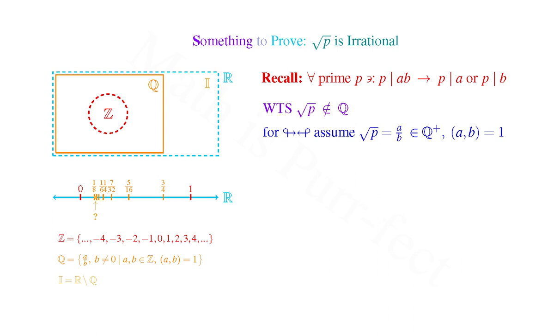Squaring both sides of this identity gives us B²P = A². This implies that P divides A², which of course is just A times A, indicating that P divides A.